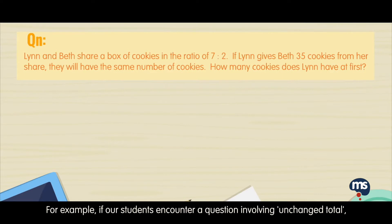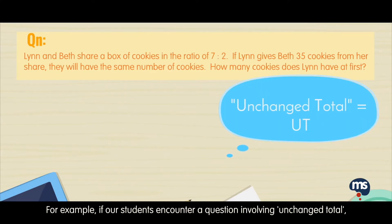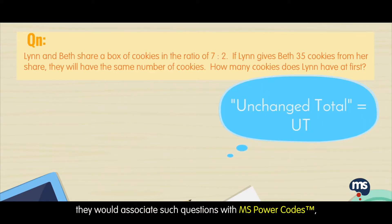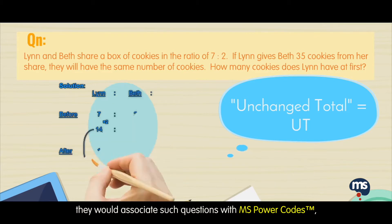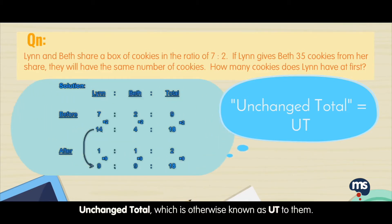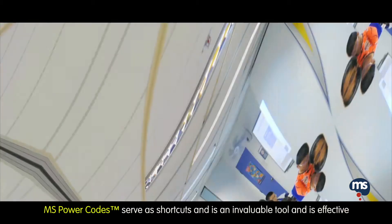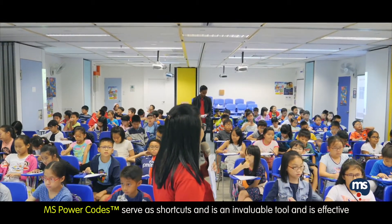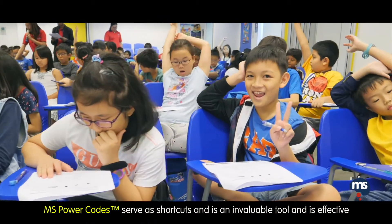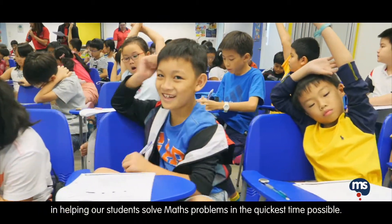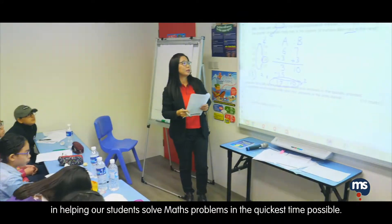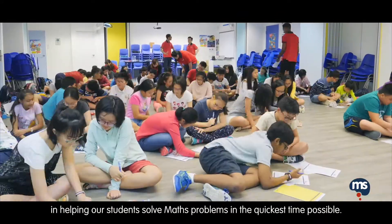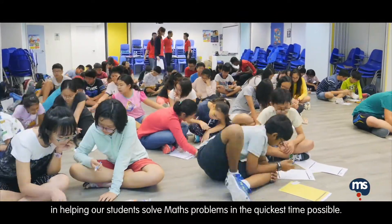For example, if our students encounter a question involving unchanged total, they would associate such questions with MS Power Codes unchanged total, which is otherwise known as UT rhythm. MS Power Codes serve as shortcuts and are an invaluable tool, effective in helping our students solve maths problems in the quickest time possible.